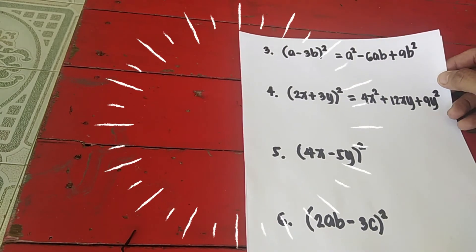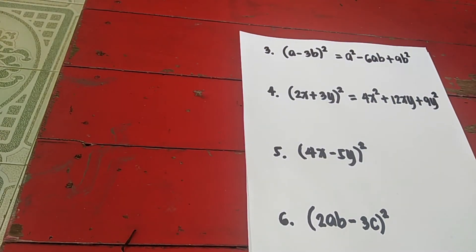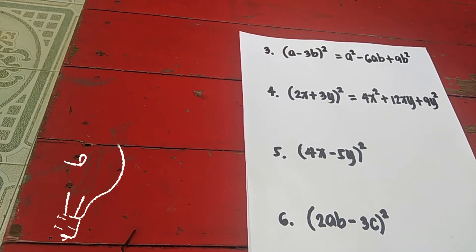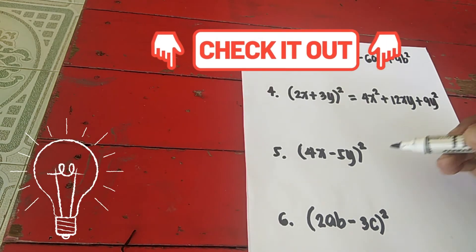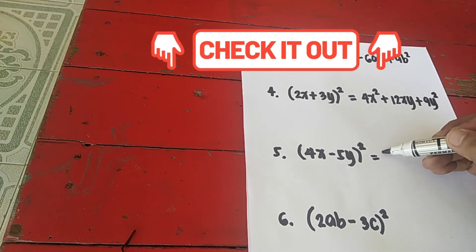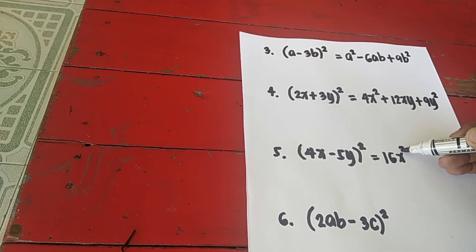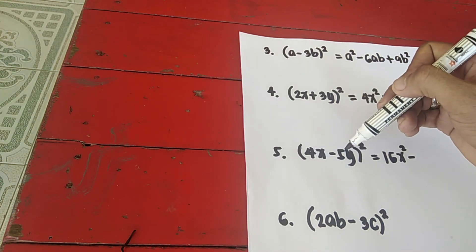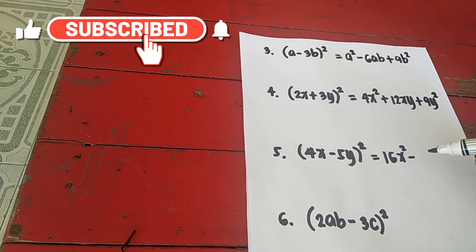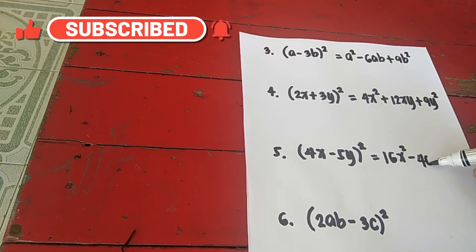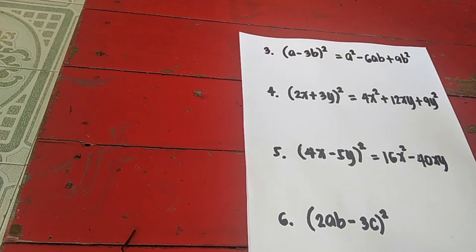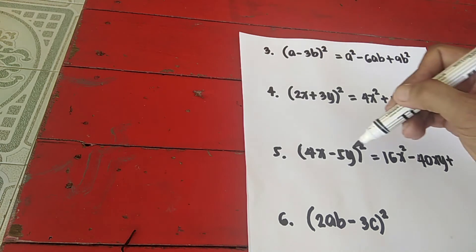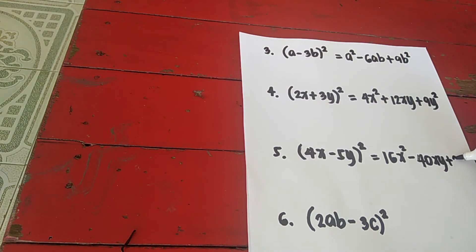Let's proceed to number 5: (4x − 5y) squared. We apply the shortcut. Square the first term — 4x times 4x is 16x squared. This is minus, so the middle term is minus. Multiply 4 times 5 to get 20, times the constant 2, so that is 40xy. The third term is always positive — square 5y: 5 times 5 is 25.